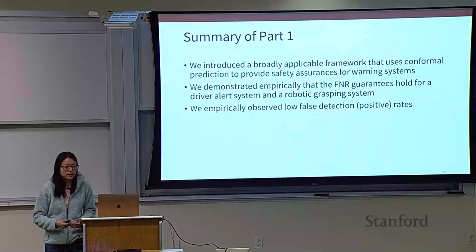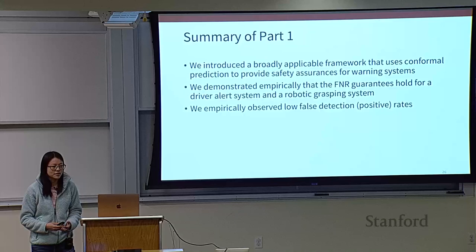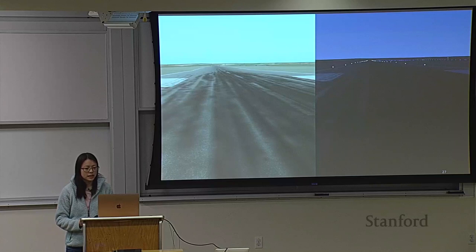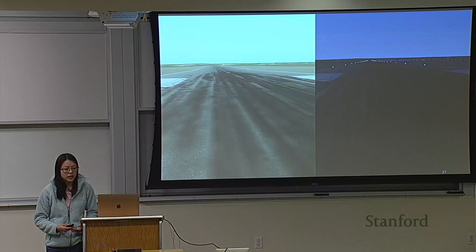To summarize the first part of the talk: we introduced a broadly applicable framework that uses conformal prediction to provide safety assurances for warning systems. We demonstrated empirically that the false negative rate guarantees hold for a driver alert system and a robotic grasping system, and we empirically observed a low false positive rate. That method works well if the data distribution didn't change, but what if there is a distribution shift?